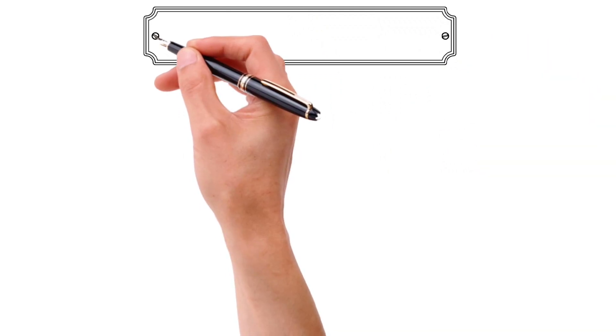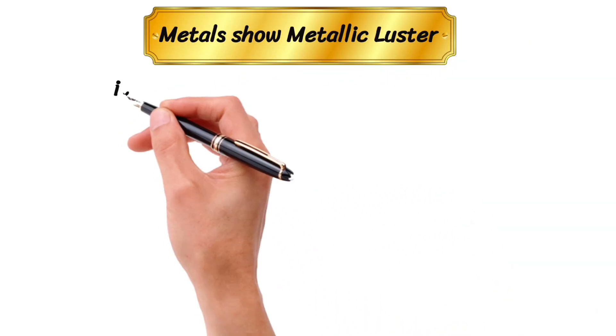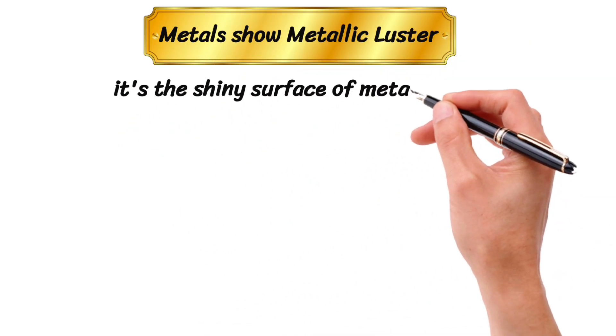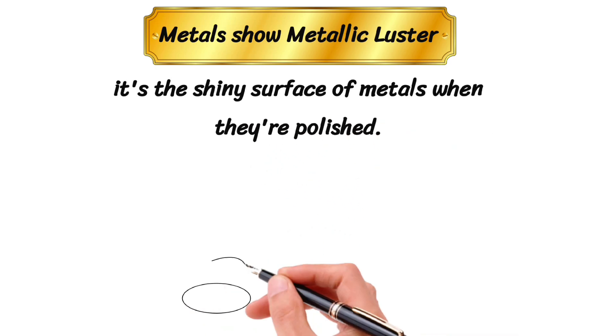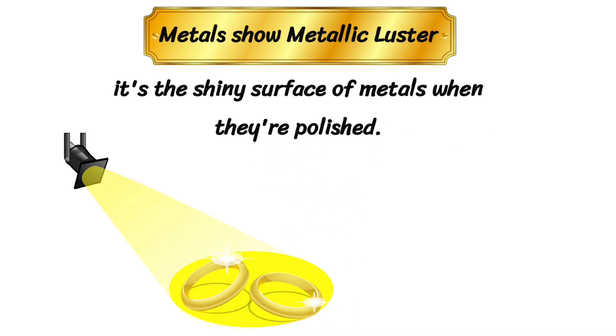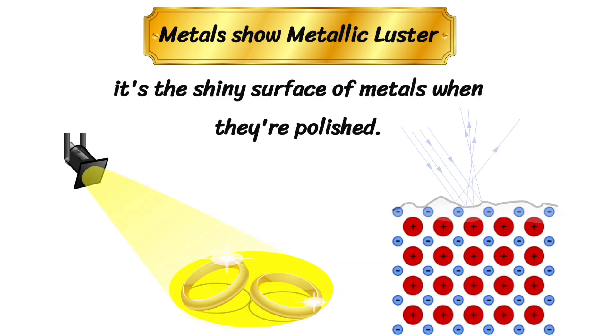Metals show metallic luster. What exactly is metallic luster? It's the shiny surface of metals when they're polished. This is because of their ability to reflect light. This reflection is because of their free electrons that interact with light, causing it to bounce off the surface and create a beautiful shine.